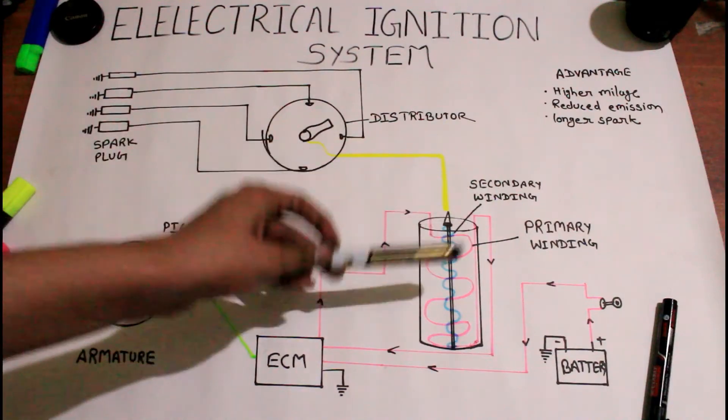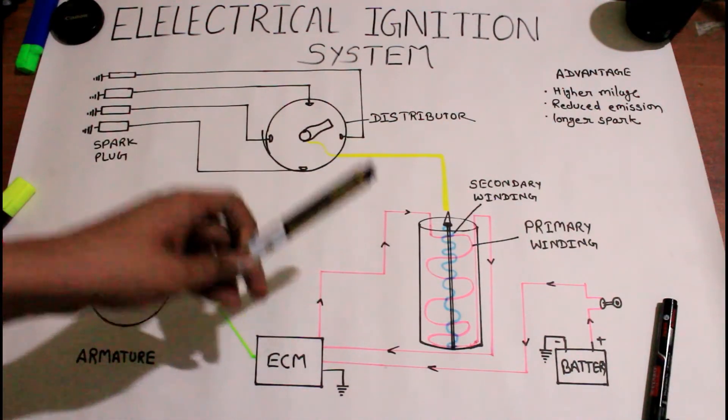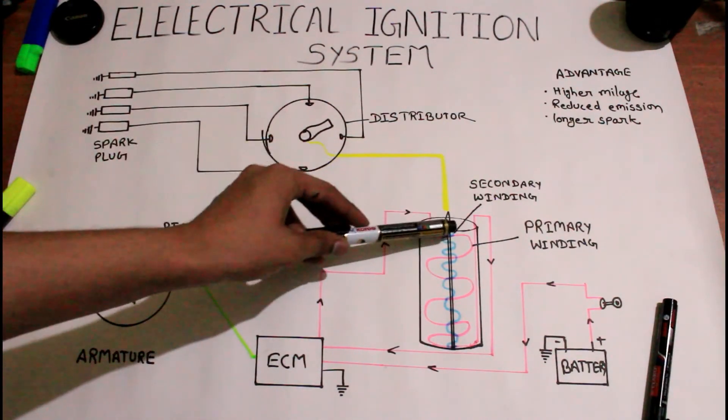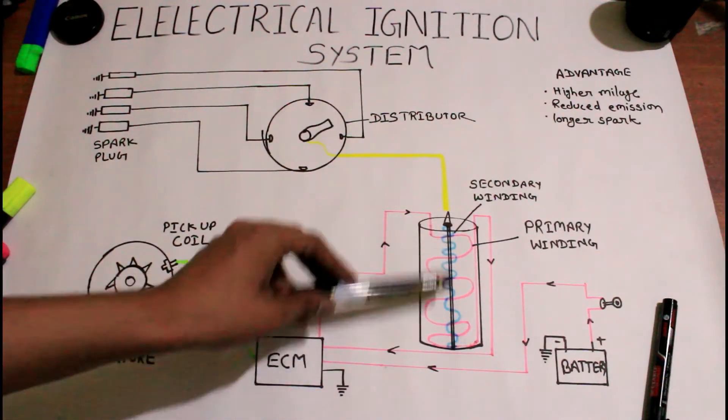Because of this on and off in the current again and again, a magnetic field generates in the secondary winding.